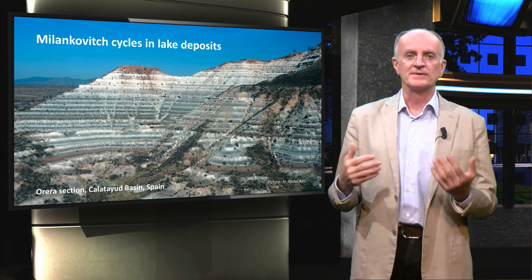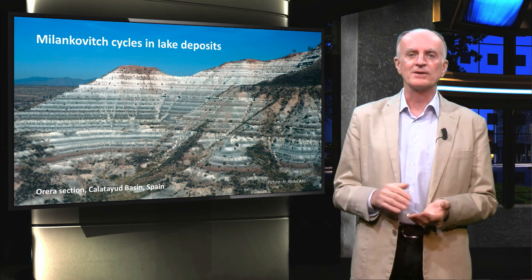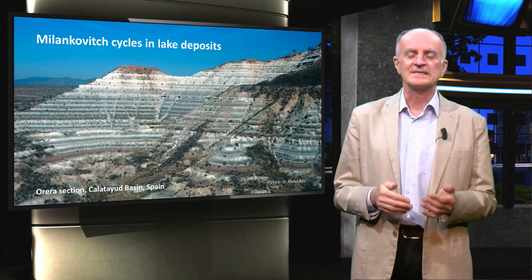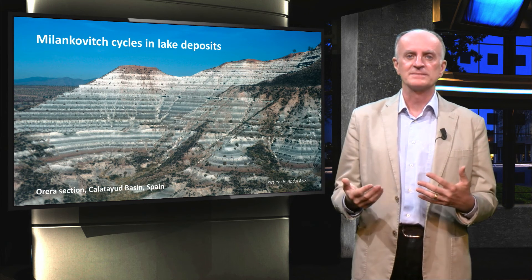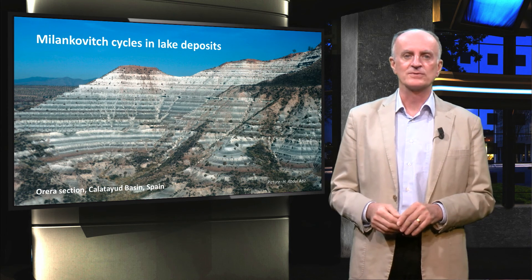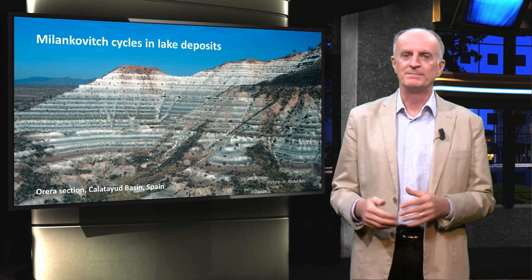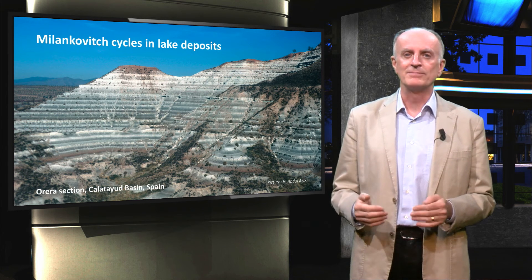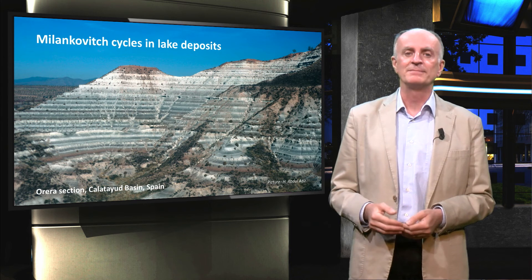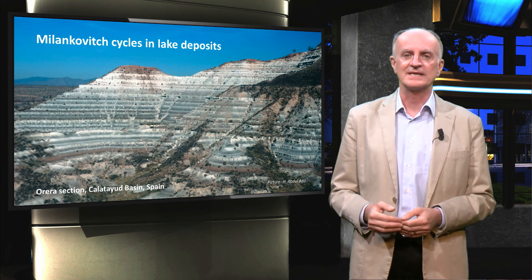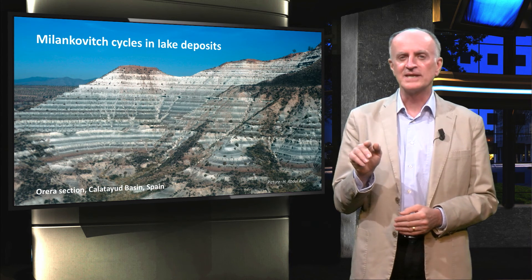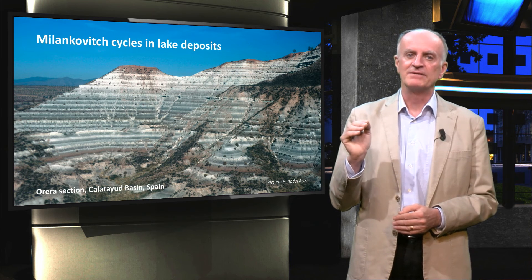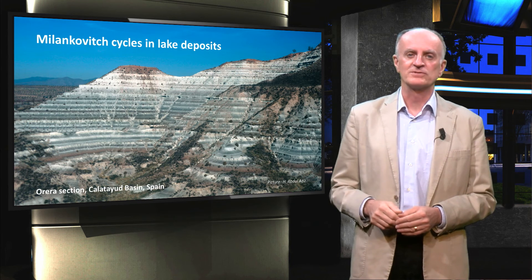This can result, for instance, in regular modification of the temperatures, which itself has an impact on the amount of organisms living in a certain lake or sea. In the picture you see a beautiful example of sedimentation modulated by Milankovitch signals. The whitish layers are rich in carbonates, while the darker ones have a higher proportion of shales.